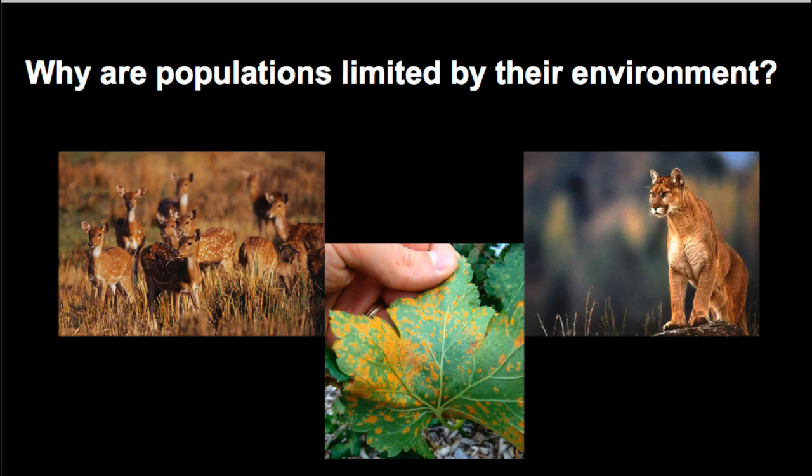We've been talking about the key question: why are populations limited by their environment? From our previous investigations, we know they're limited by what are called limiting factors — things such as competition or predation, like the cougar looking at those deer, or even disease. As a population grows larger, they begin to compete for resources, they're preyed upon more frequently, and disease spreads more easily. Those factors limit how large a population can get in a given ecosystem — we call that limit the carrying capacity.